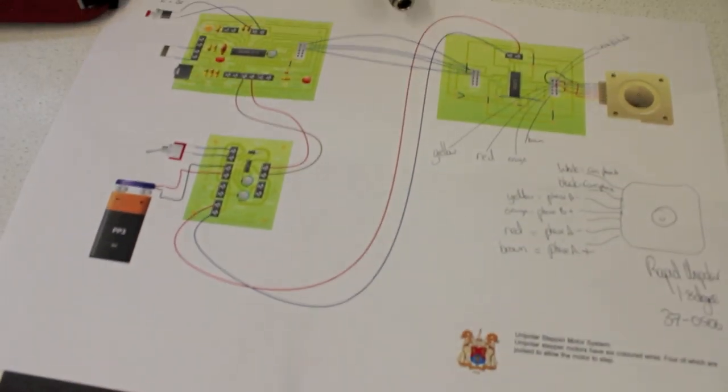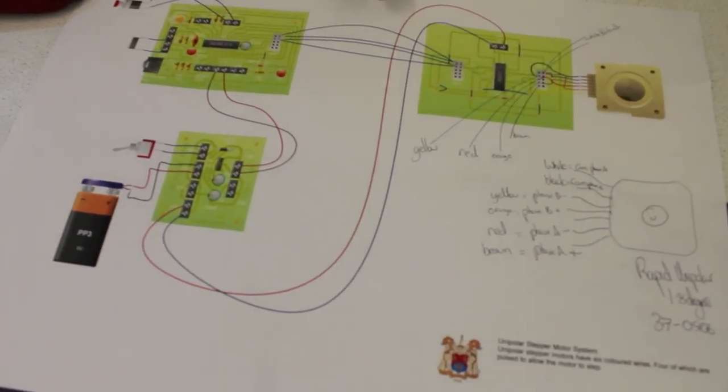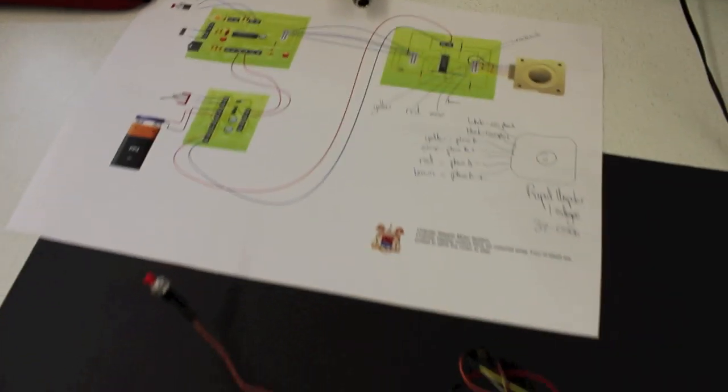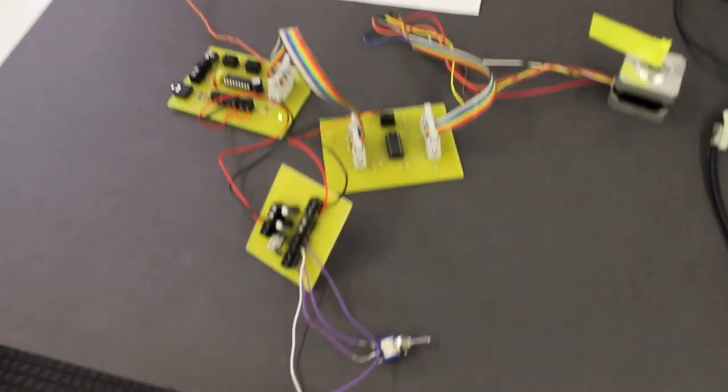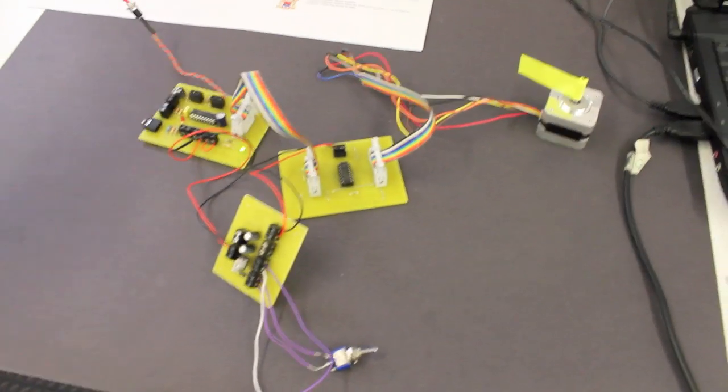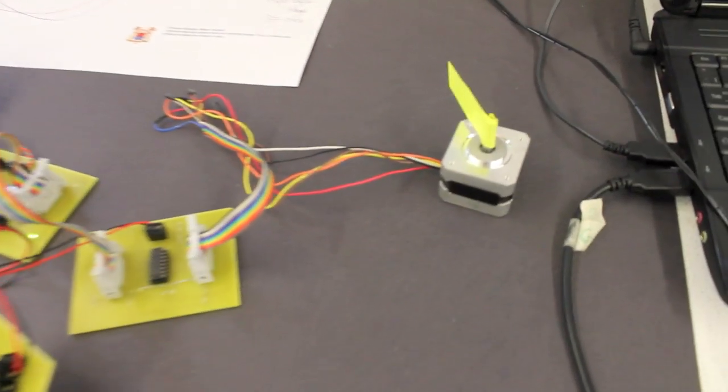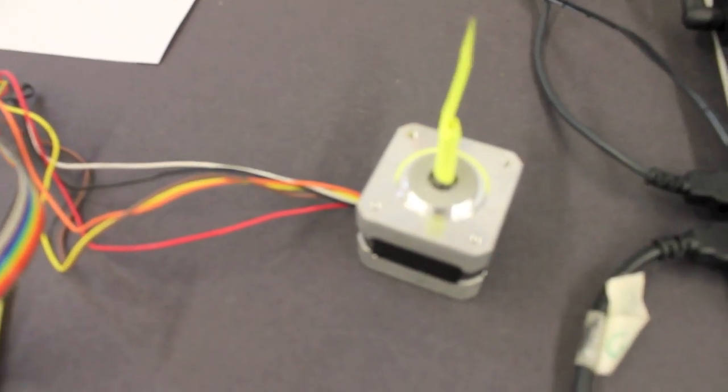We have actually simulated the whole thing using Circuit Wizard. That's our system diagram, complete with scribbles, and we have our system now working. So if we push the button, you can see that the stepper motor will step round. In this case, it's obviously clockwise.